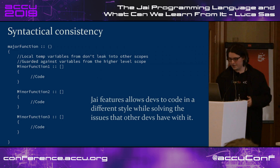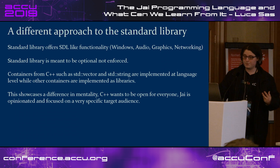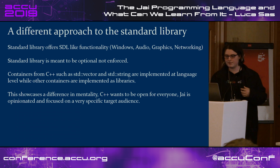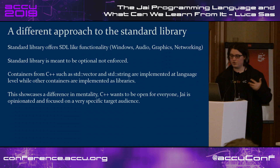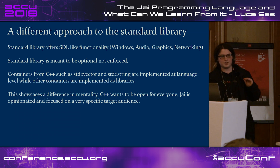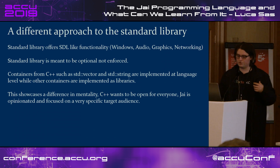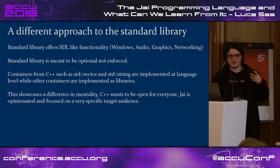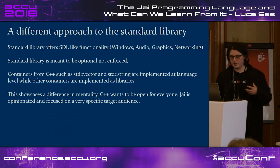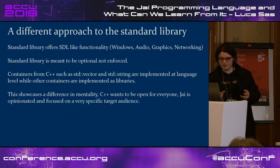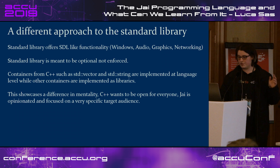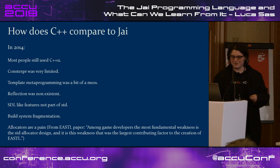Jai has a very different approach to its standard library. It's important that it offers SDL-like functionality for rapid prototyping — window, audio, graphics, networking. The standard library is also meant to be optional and not enforced. For certain C++ containers like vectors and strings, in Jai they are implemented at the language level. This shows a different mentality: where C++ wants to be open for everyone, Jai is opinionated and focused on a specific target audience.